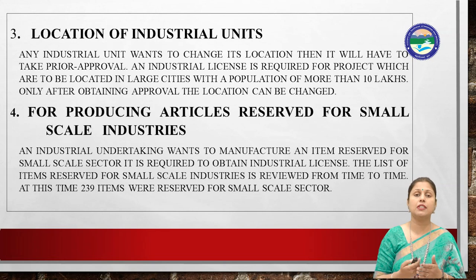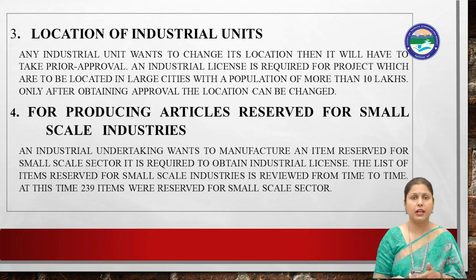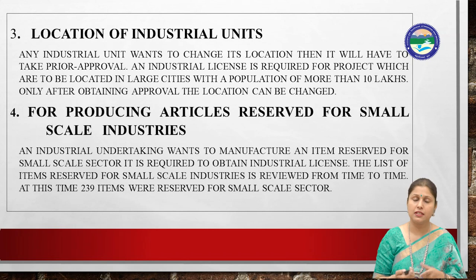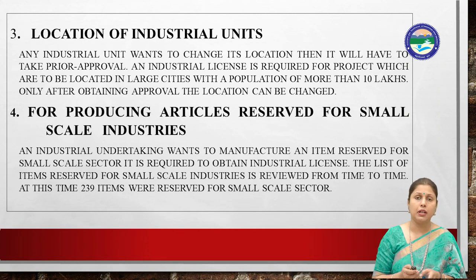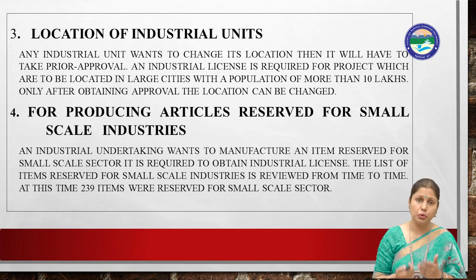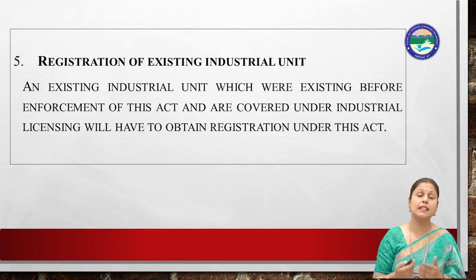Third, for change of location of industrial units — if an existing unit wanted to shift to a different location or a location with a population of over one million, a license was required. Fourth, for producing articles reserved for small-scale industries — if a large industry wanted to manufacture products reserved for small-scale industries, it was necessary to take a license. Fifth, registration of existing industrial units was also required under this licensing policy.